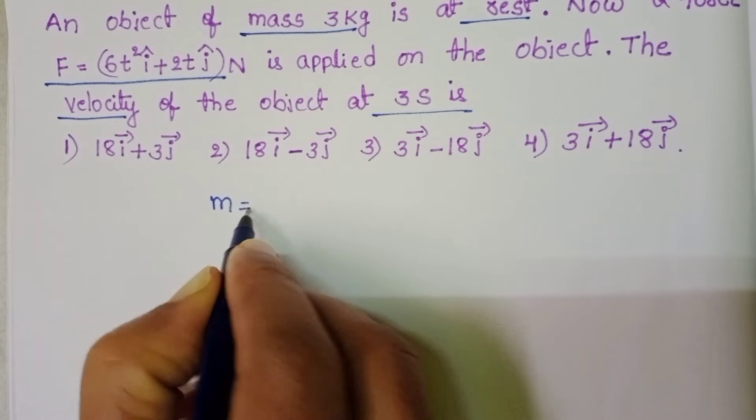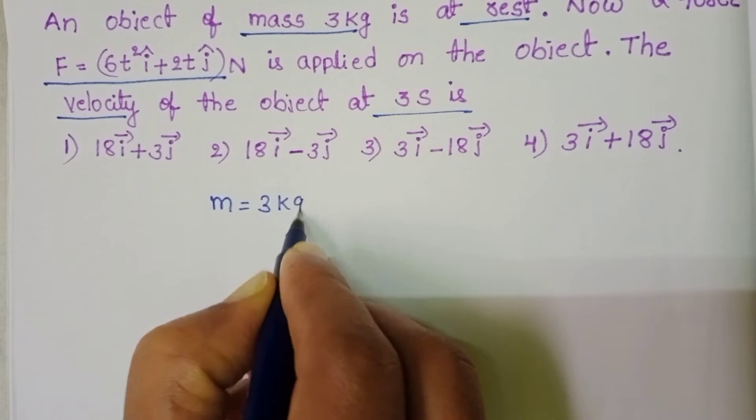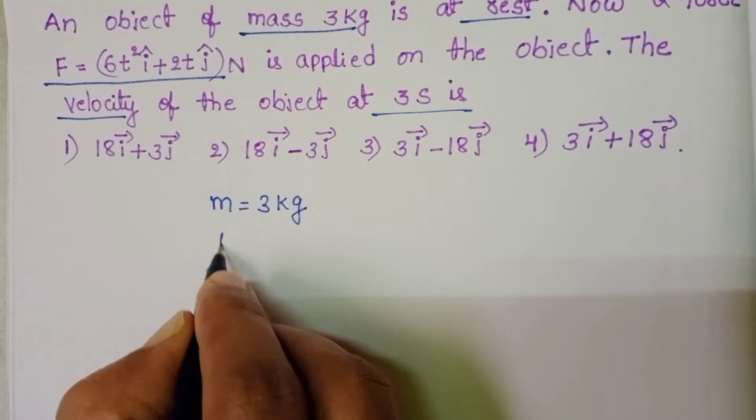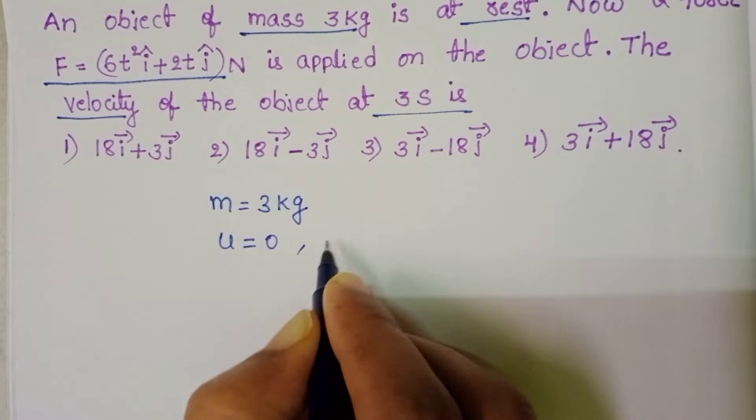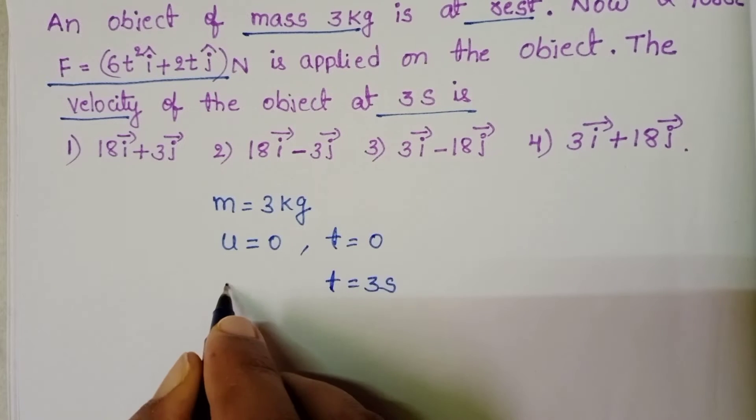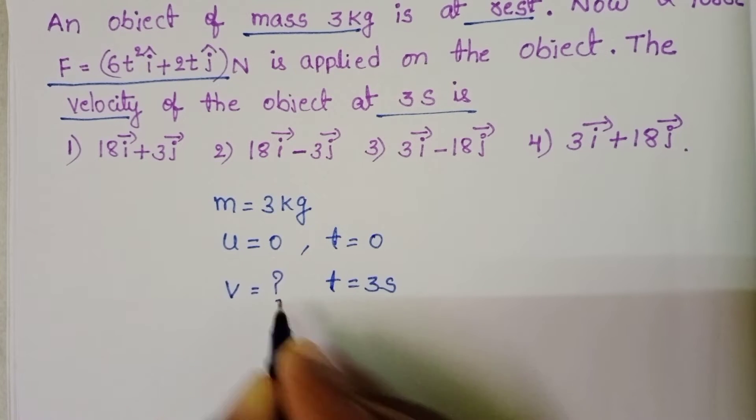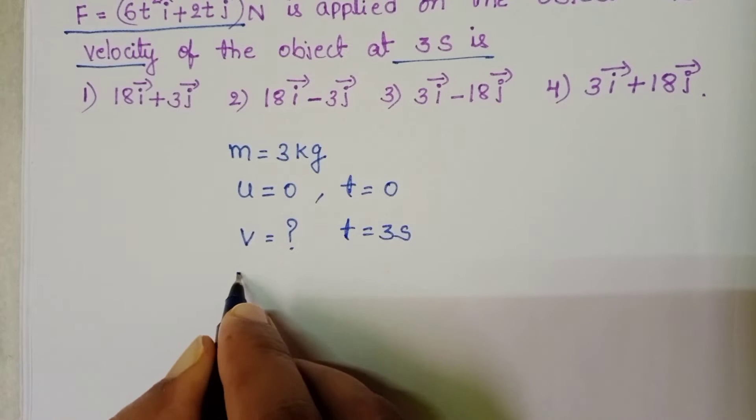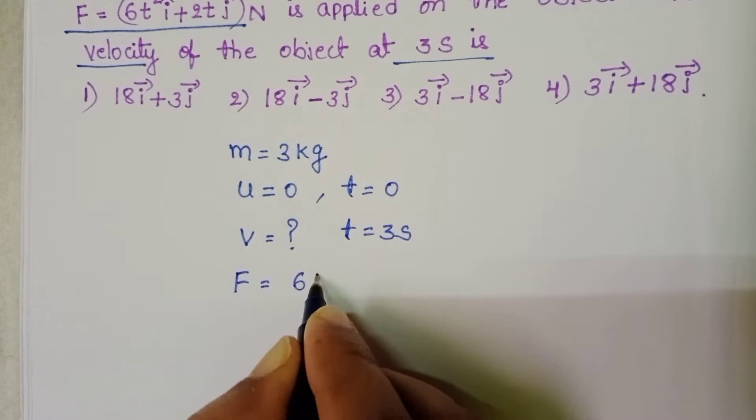Given mass of the object is 3 kg, initially this object is at rest position. At time equals 3 seconds, we have to find out the velocity of the object. Given force is a function of time.